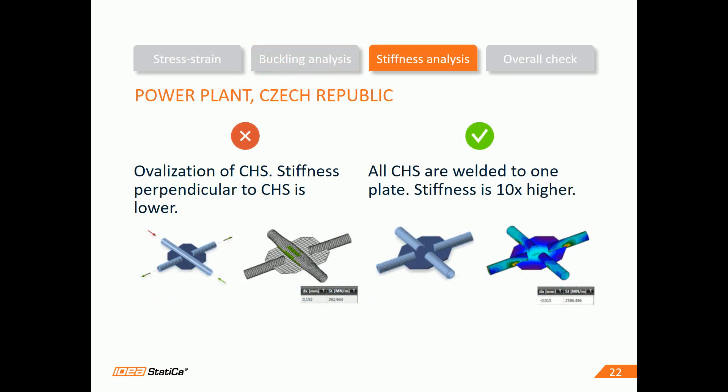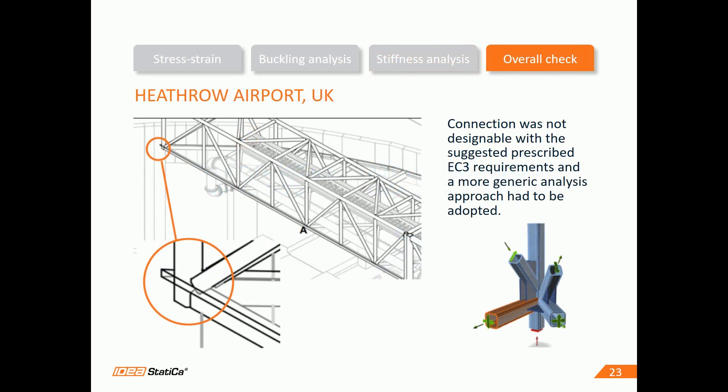Stiffness analysis is also important. When we understand how to modify the joint, like in this example from a power plant, we can easily increase the stiffness 10 times. It all comes to a clear pass-fail overall check, like this joint in service in a steel bridge at Heathrow Airport. The joint was not designable using standard tools — with IdeaStatica, it is possible, and the bridge is there today.